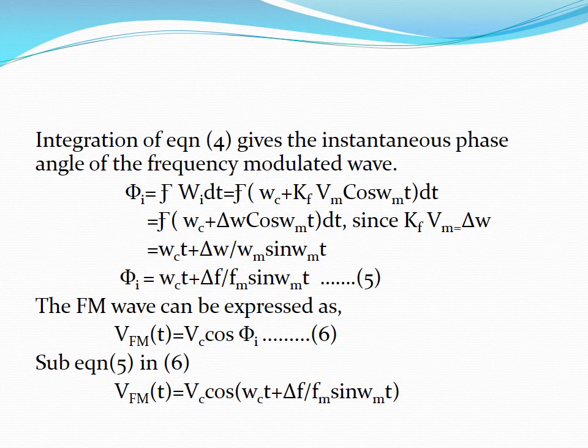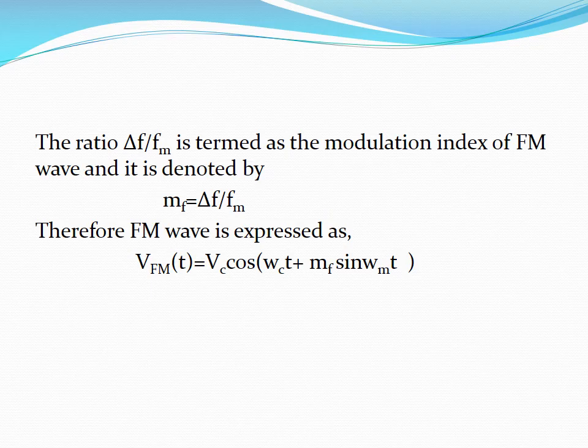The FM wave is expressed as Vfm(t) = Vc·cos(φi). Next, we are going to substitute equation number 5 in equation number 6. Therefore, Vfm(t) = Vc·cos(ωc·t + (Δf/fm)·sin(ωm·t)). Here, Δf divided by fm is termed as the modulation index of the FM signal and it is denoted by mf. Therefore, the FM wave is expressed as Vfm(t) = Vc·cos(ωc·t + mf·sin(ωm·t)). This is the equation of the FM signal.